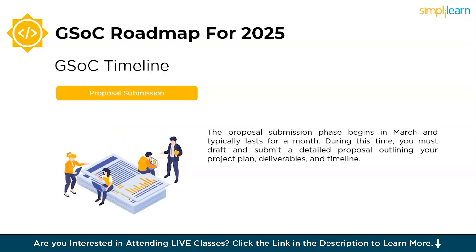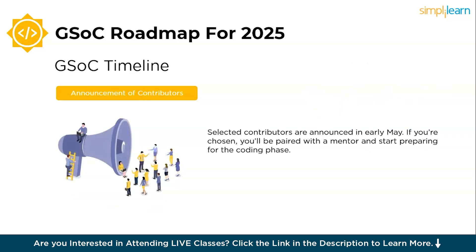The next stage is proposal submission, which happens between March and April. The proposal submission phase begins in March and typically lasts for a month. During this time, you must draft and submit a detailed proposal outlining your project plan, deliverables, and timeline. Make sure to highlight your skills, past experience, and how you will achieve the project goals. The final stage is the announcement of contributors, which happens around early May. Selected contributors are announced in early May. If chosen, you will be paired with a mentor and start preparing for the coding phase — setting up your development environment, finalizing project goals, and scheduling regular mentor check-ins.